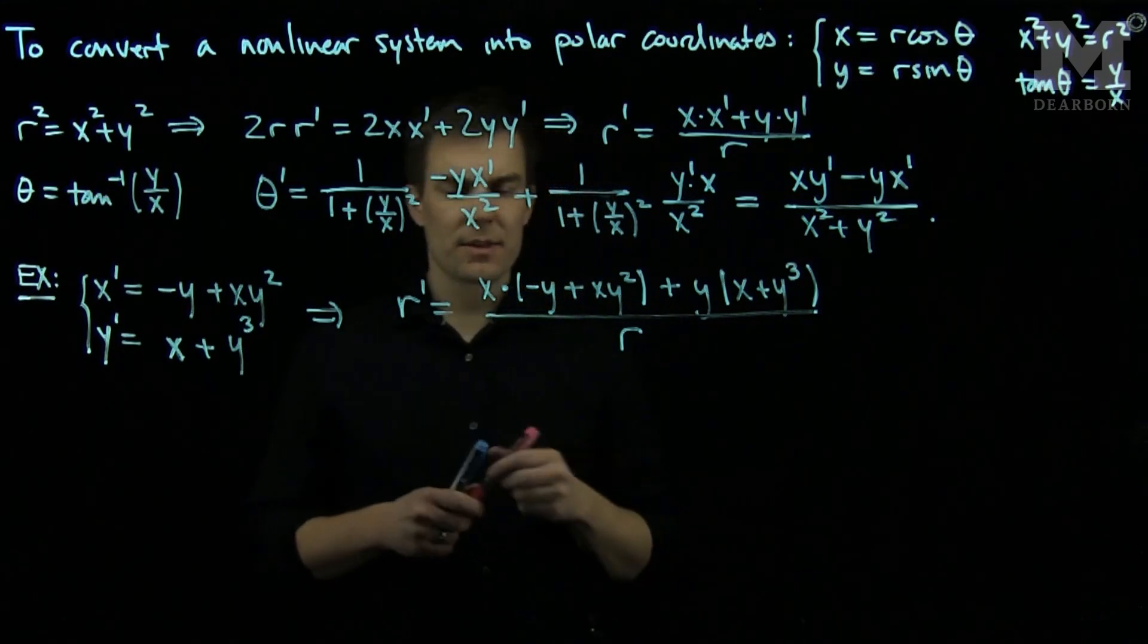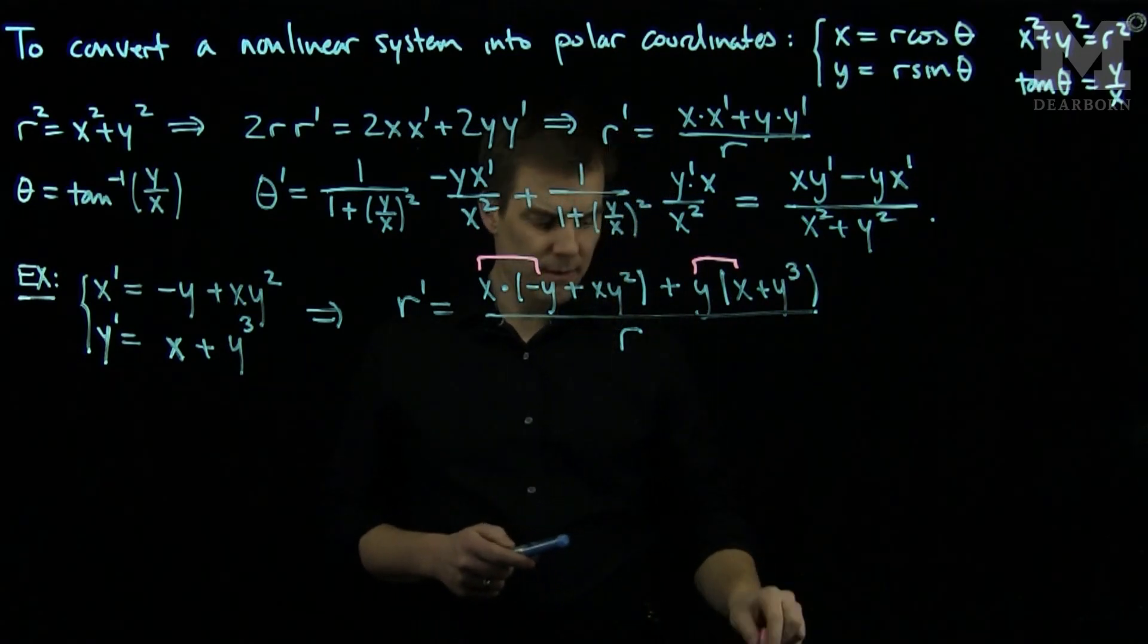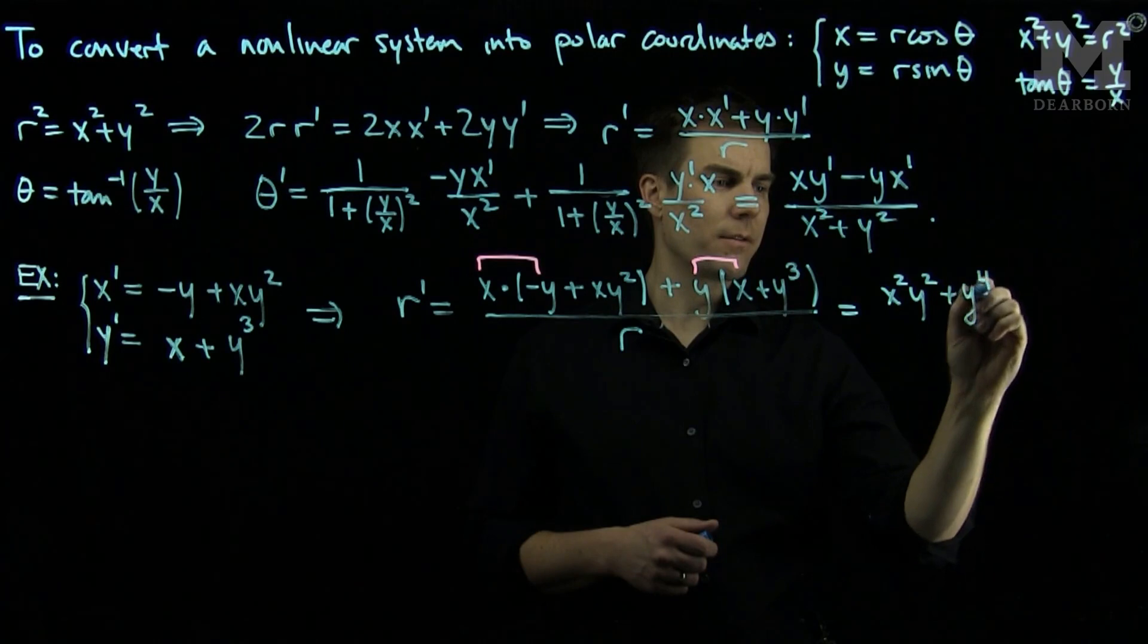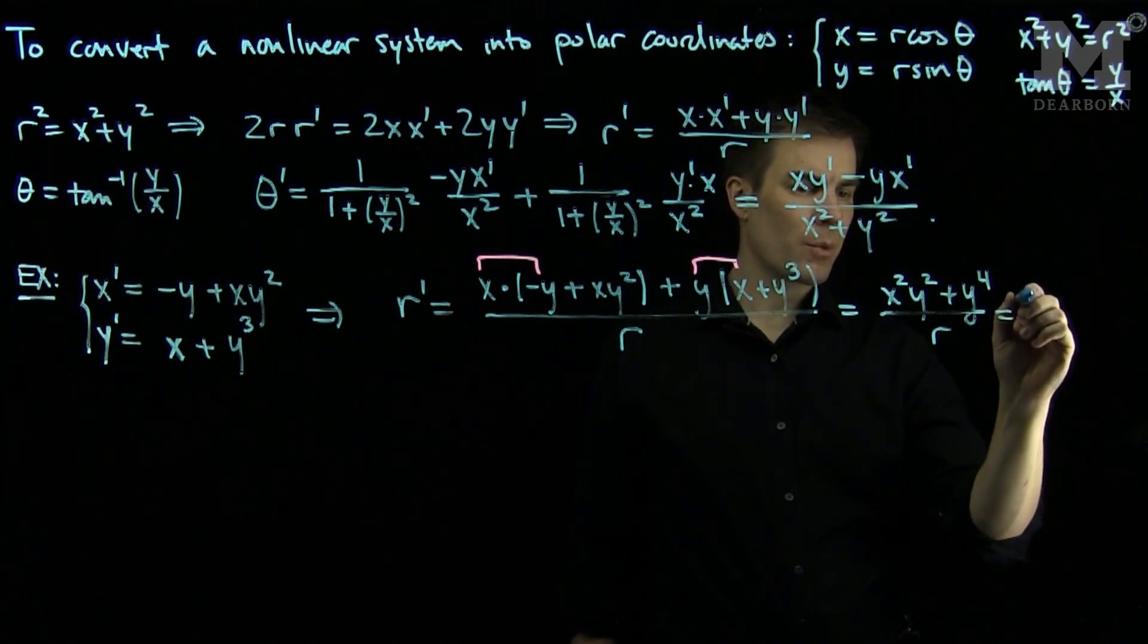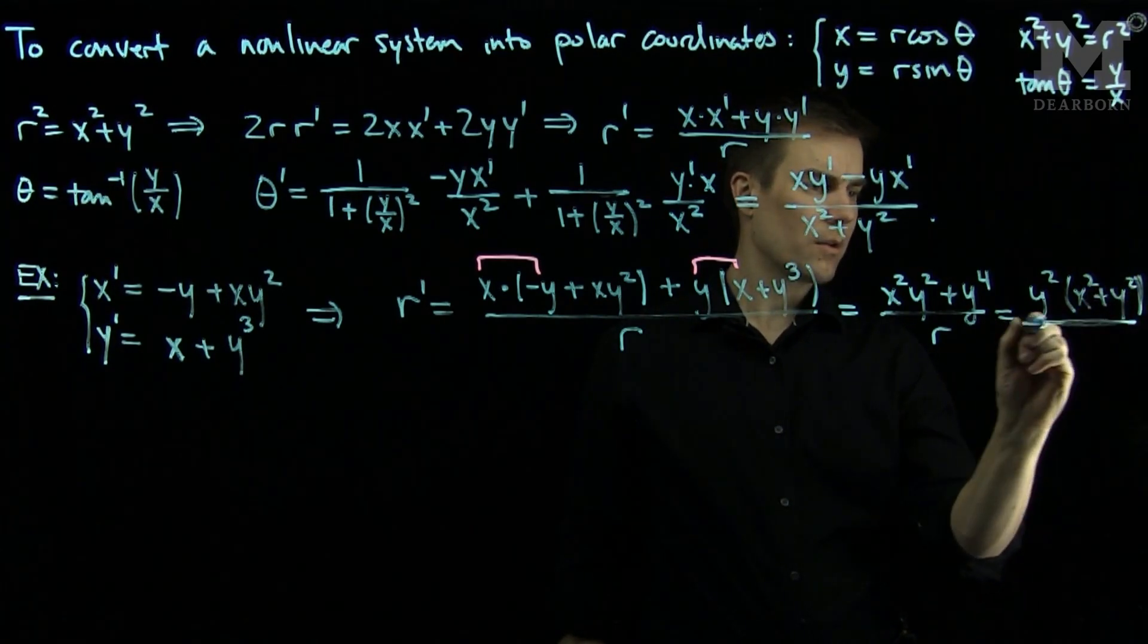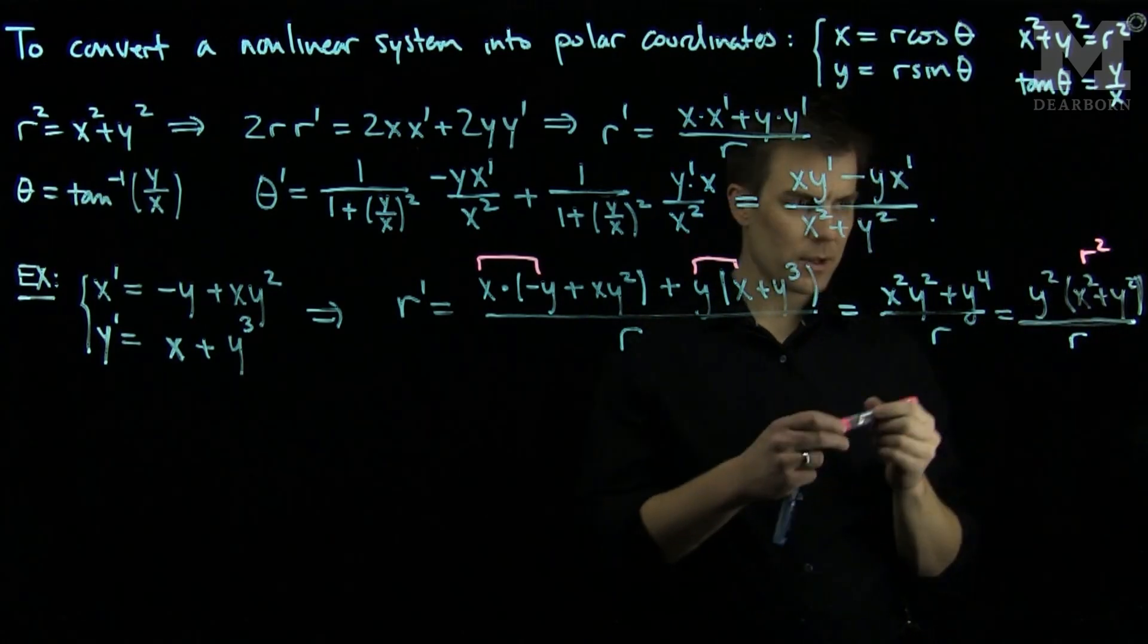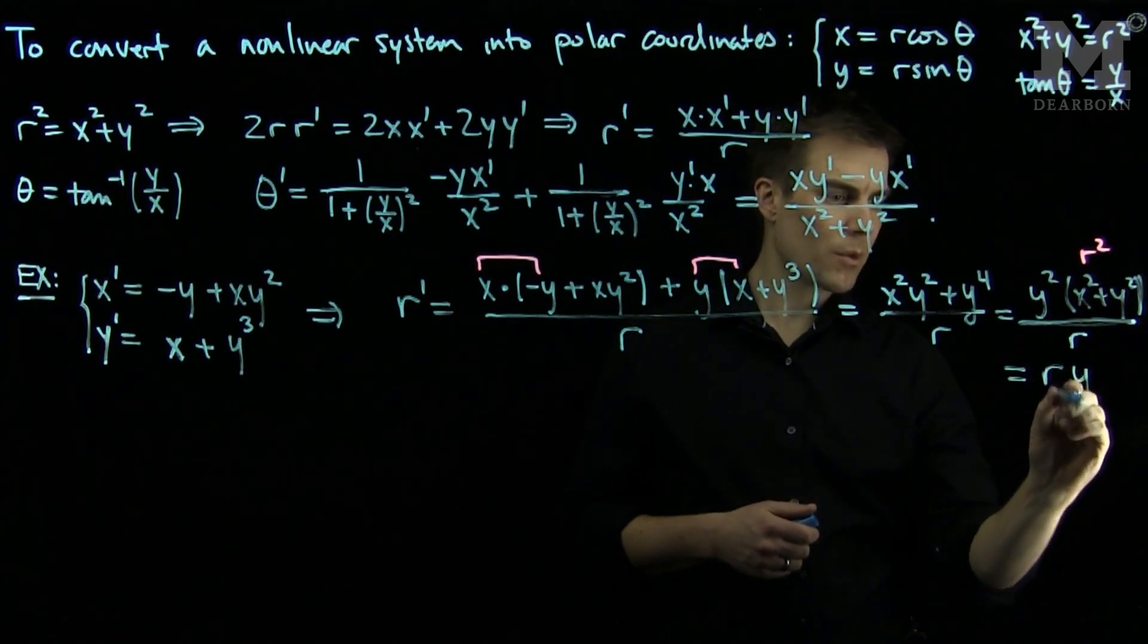We can see that this x negative y and this yx term will cancel out, and I will have x squared y squared plus y to the fourth over r. I can simplify by factoring out a y squared, so this will be y squared times x squared plus y squared over r. This x squared plus y squared is r squared, so I will have r times y squared.